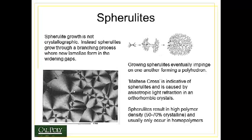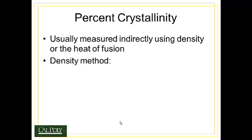More commonly, because you have a spherulite with lamellae stacked together, you're going to have some region where the polymer molecule is not able to be organized into the crystal and is therefore amorphous. So you end up with a semi-crystalline material. It's much more common to have a polymer that's 50 to 70% crystalline.